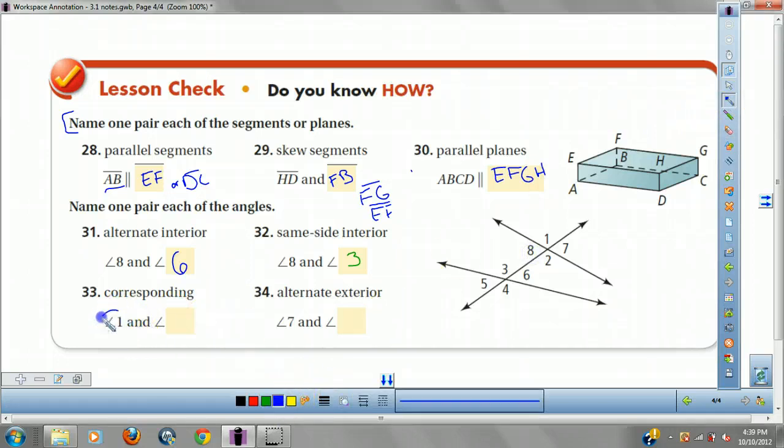And corresponding, which one corresponds to 1? 1's upper left-hand corner. 3 is the corresponding in the upper left-hand corner. And alternate exterior. We look at 7. We have to jump over the lines and stay on the outside. And we end up at 5.